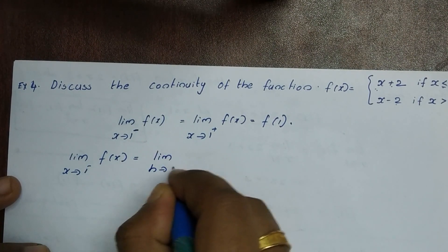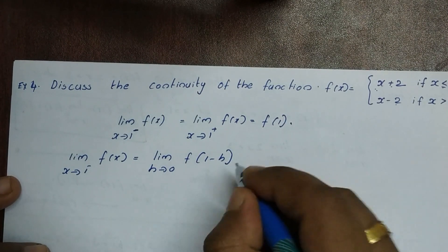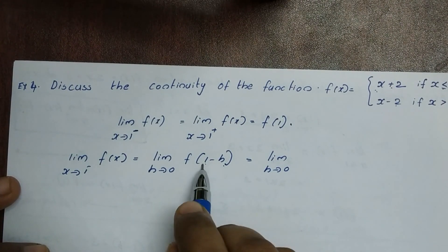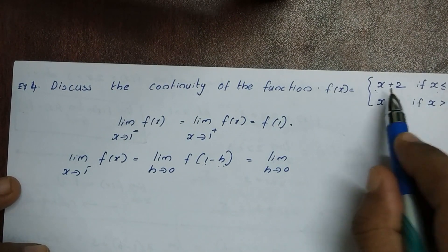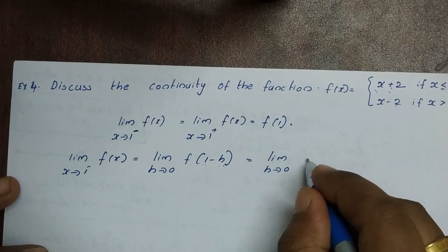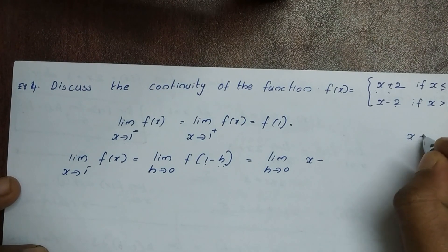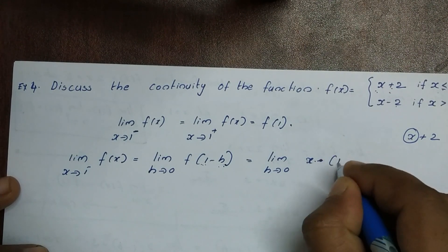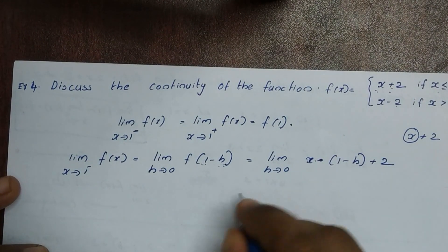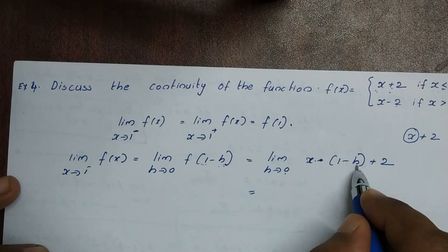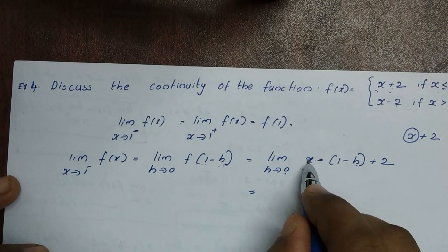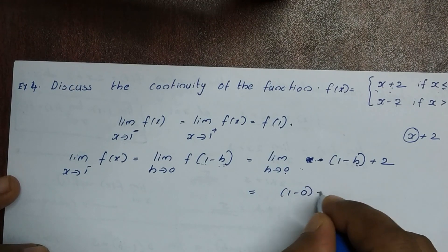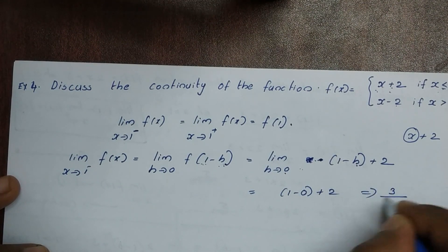So limit x tends to 1 minus of f(x) equals limit h tends to 0 of f(1-h). Since x = 1-h is less than or equal to 1, we use x+2. So (1-h)+2, and as h tends to 0, this equals 1+2 = 3.